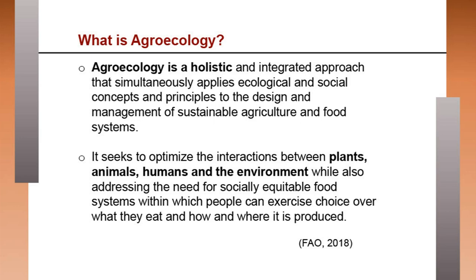Social concepts are also central — the people working in the field are part of agroecology, as are those dependent on it, such as consumers who need food. Even traders involved in the food system are included. Agroecology seeks to optimize the interaction between plants, animals, humans and the environment, while addressing the need for socially equitable food systems within which people can exercise choice over what they eat and how and where it is produced.